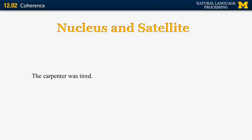The RST relations are determined by two items. One is called the nucleus of the relation and one is called the satellite. Suppose we have the two sentences: 'The carpenter was tired. He had been working all day.' The second sentence elaborates on the first one — it gives us an explanation why the carpenter was tired. The second sentence is less important than the first one because it depends on the first one for its existence.